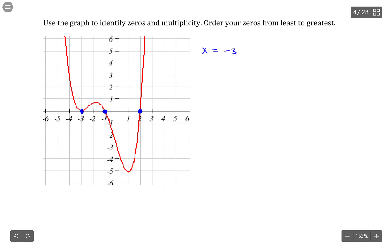So we have x equals negative 3, x equals negative 1, and x equals 2. So those are my three zeros.